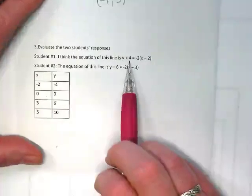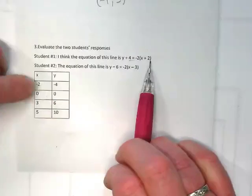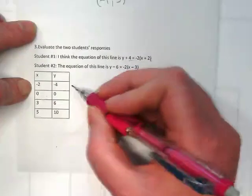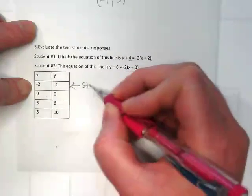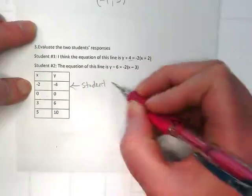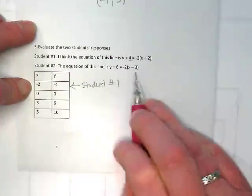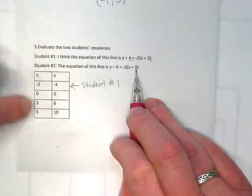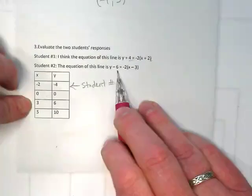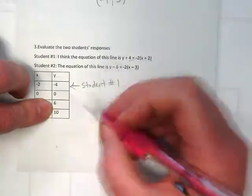I see 4 here, and that was this negative 4. And 2 here and negative 2. So this is what student 1 used for their pair for the point. I see negative 3, so that's going to be 3. And 6, negative 6 is 6, so this is student 2.